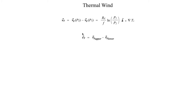I want to focus on this vector quantity right here — the geostrophic wind at the upper level minus the geostrophic wind at the lower level. I want to go ahead and rearrange the terms of this equation so that instead of having a vector subtraction, I have a vector addition, which is a lot easier and simpler to work with. So if we do that, we get that the geostrophic wind at some upper level must be equal to the thermal wind vector plus the geostrophic wind at the lower level.